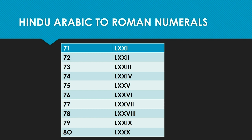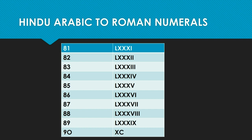From 71 to 80, you do the same thing. Seventy plus 1 — you know 70 is 50 plus 20, so LXXI for 71. You just add the numbers and place the Roman numerals accordingly. Eighty will be 50 plus 30, so LXXX.